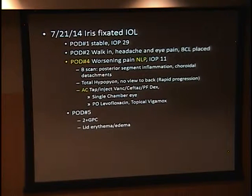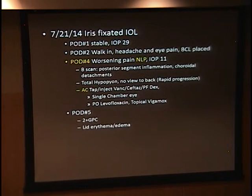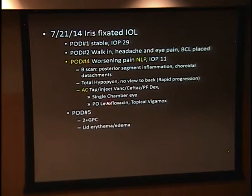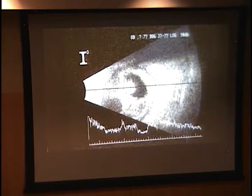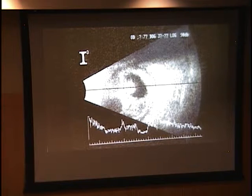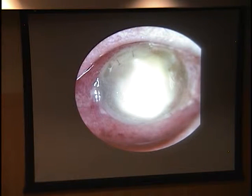Four days after surgery he had worsening pain and headache, presenting with no light perception. Pressure was down to 11 but a B-scan showed posterior segment inflammation and choroidal attachments. At the VA that morning, the resident noted fibrin in the anterior chamber and described a white collection of material posterior to the lens coming forward. He was sent to Moran, and within three hours Dr. Bell saw him with a total hypopyon — a very rapid progression. He was urgently taken to the OR for a tap and inject into the anterior chamber, given that he was vitrectomized with an AC lens.